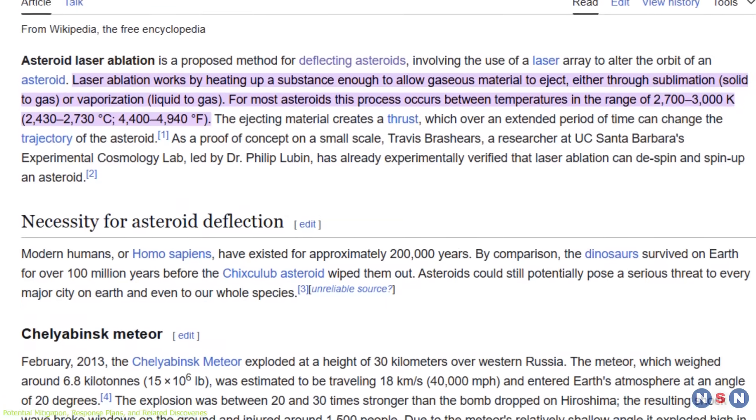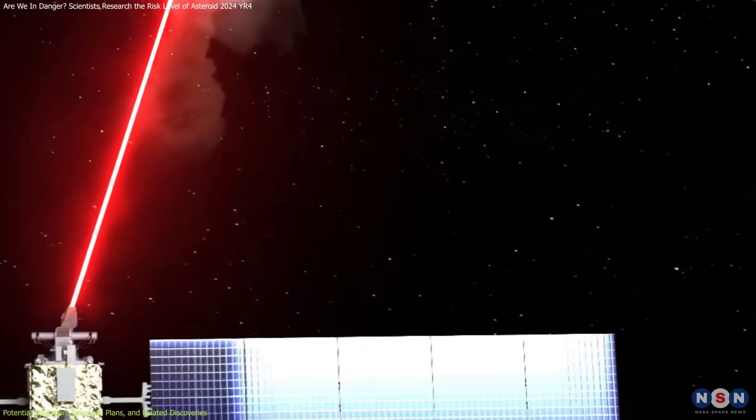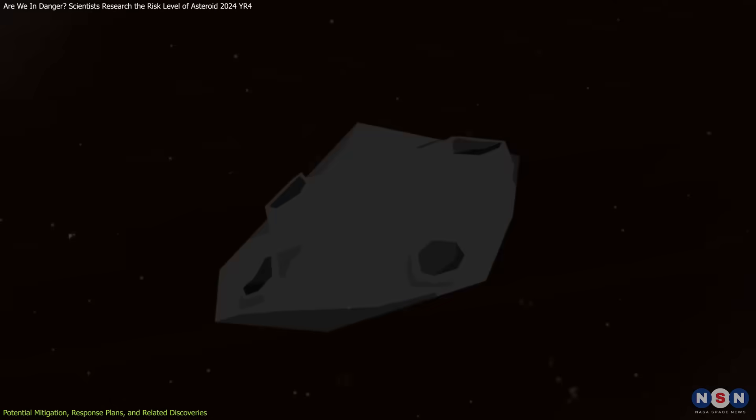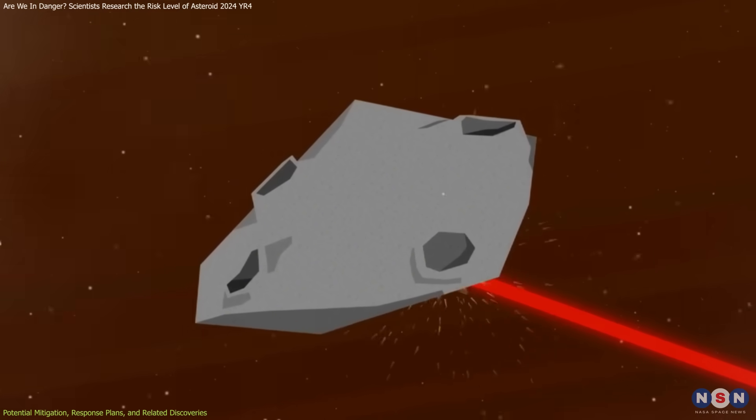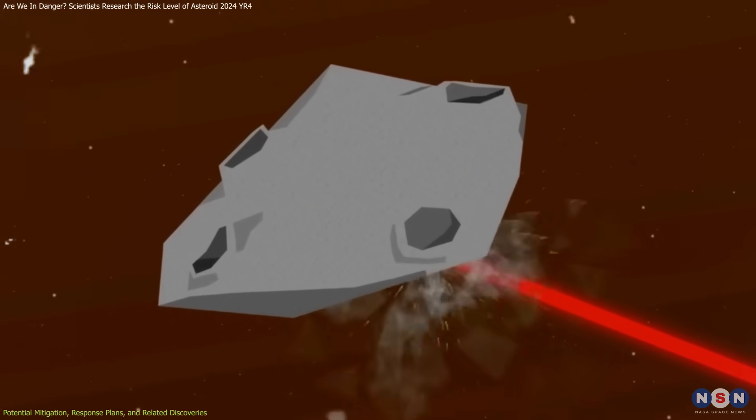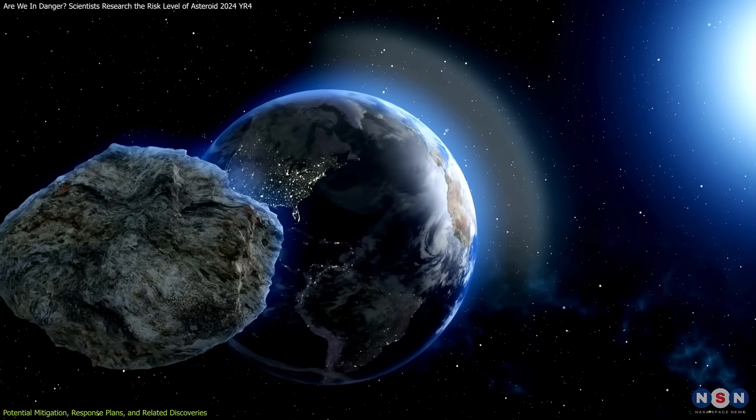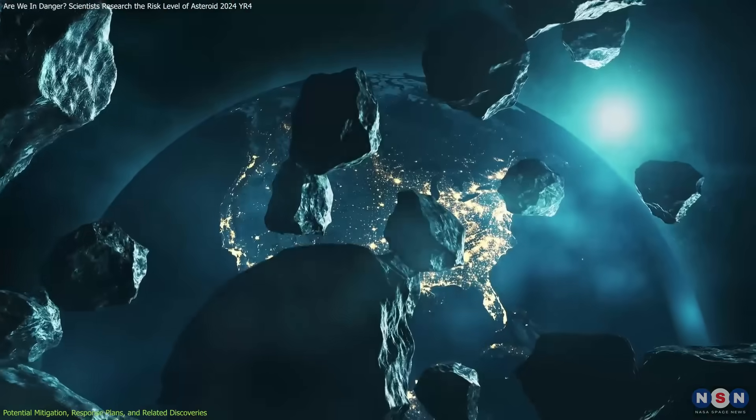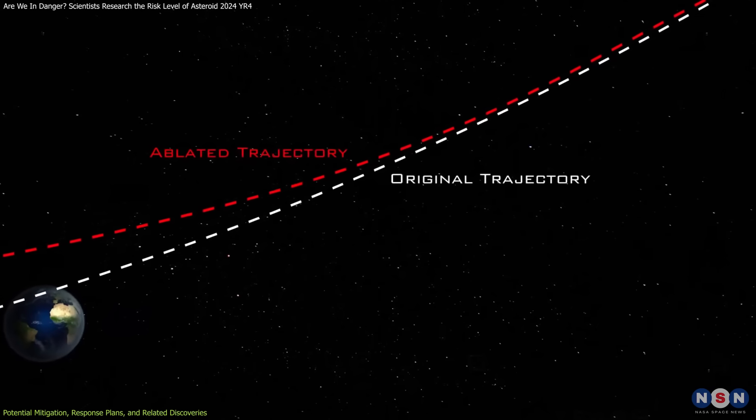In parallel with kinetic impactors, scientists are exploring innovative methods such as laser ablation. High-powered lasers can be aimed at an asteroid's surface to vaporize material, creating a jet effect that slowly modifies its trajectory. Laboratory experiments and computer simulations provide compelling evidence that laser ablation could be a viable option, particularly if we have a substantial lead time. This method illustrates how advances in energy technology can be repurposed for planetary defense, offering a non-invasive means of altering an object's path.